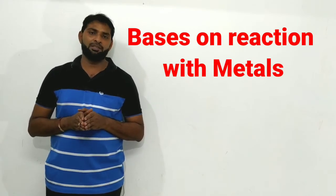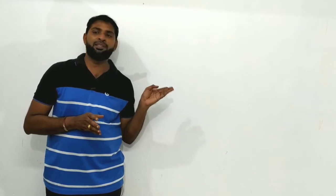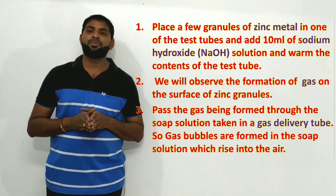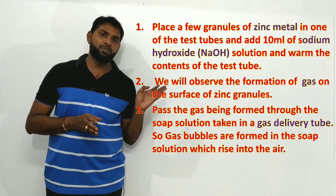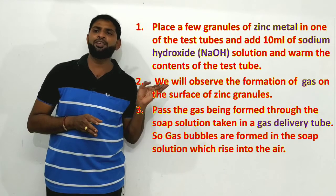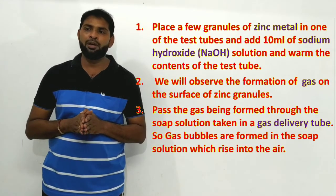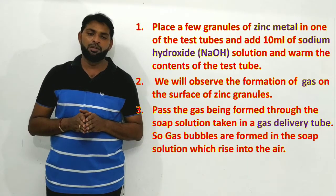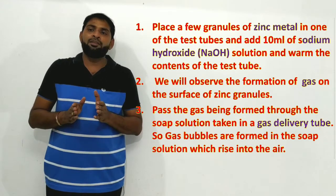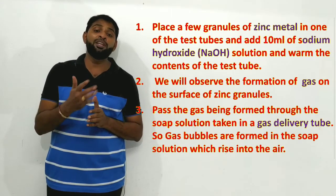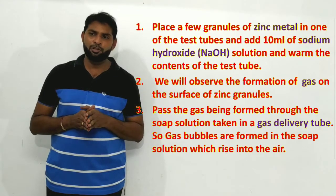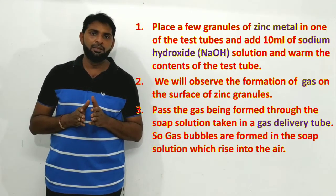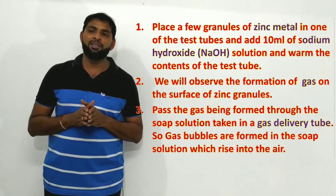Coming to the next activity — when a base reacts with a metal. The same apparatus setup is used. Place a few zinc granules in a test tube, add 10 ml of sodium hydroxide (NaOH) solution, and warm the contents of the test tube. Here, instead of HCl we add NaOH, and we need to heat it — unlike the previous activity where gas was produced immediately.